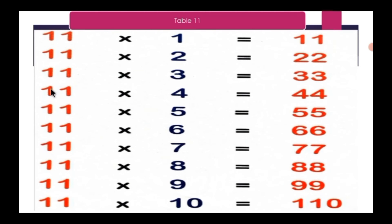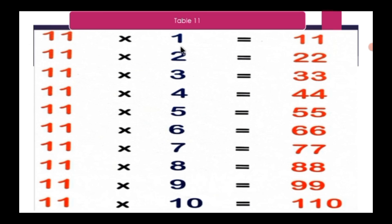Table 11. 11 ones are 11, 11 twos are 22, 11 threes are 33, 11 fours are 44, 11 fives are 55, 11 sixes are 66, 11 sevens are 77, 11 eights are 88, 11 nines are 99, 11 tens are 110.